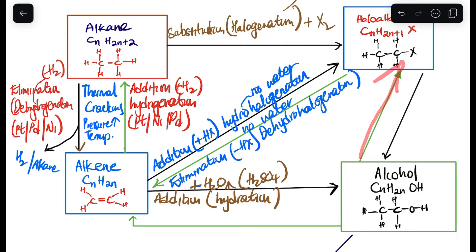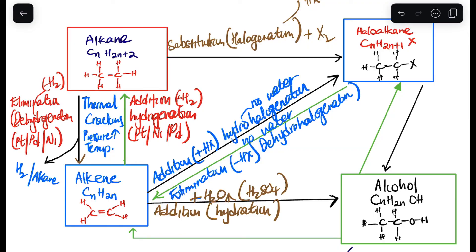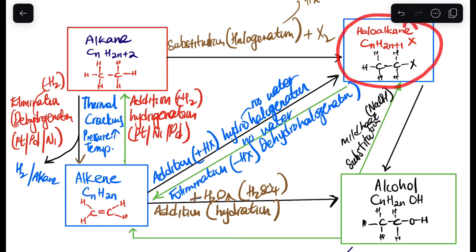From an alcohol to a haloalkane, we call this a substitution reaction. We are substituting the OH with a halogen. In this reaction we use a metal hydroxide as a base and mild heat as the condition.